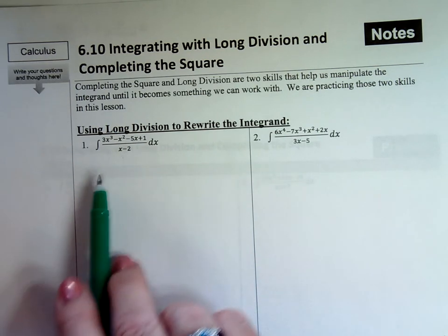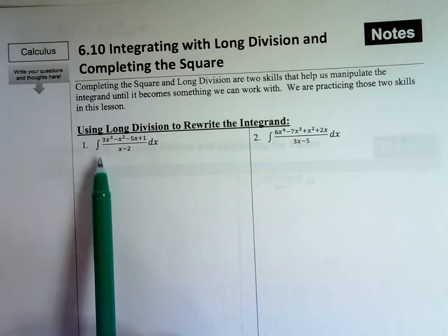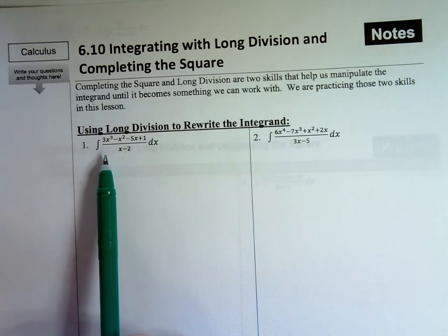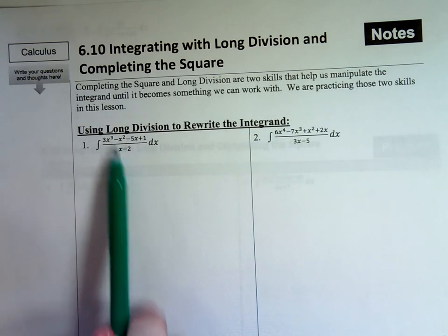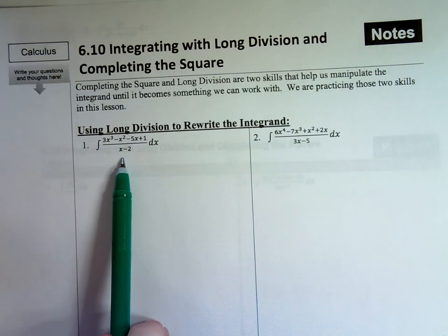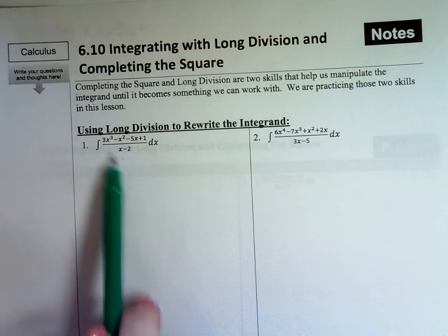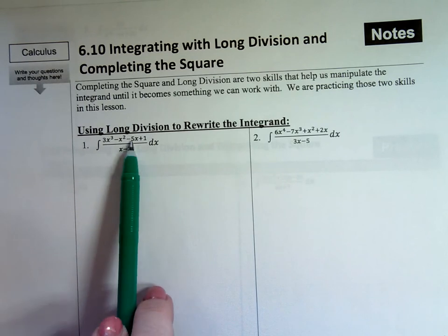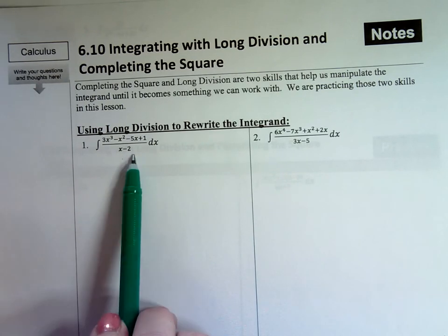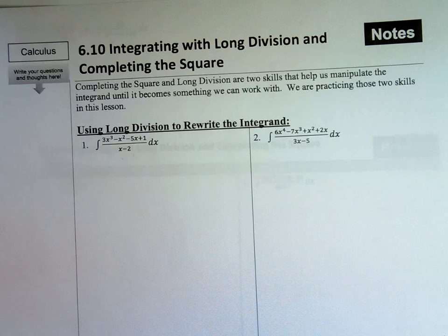Look at this — how would you possibly integrate this? You can't. Sometimes we saw where you could divide when there's a monomial in the bottom, but this has a binomial. You can only do that individual division trick if it's a monomial — a single piece in the bottom. So you can't do that, you're stuck. But here's what you can do, and it's kind of cool: you can use either synthetic division or long division.